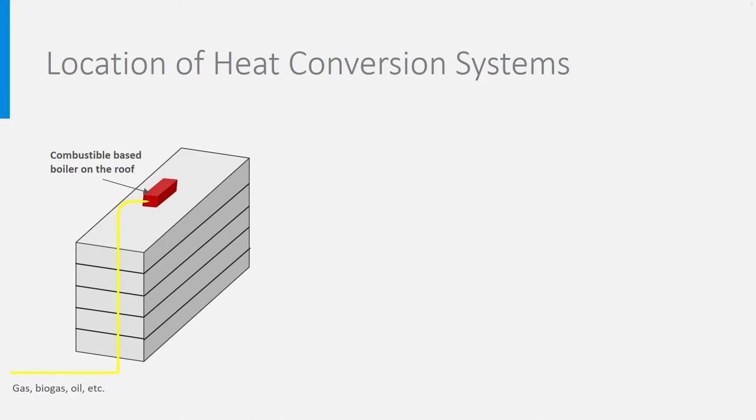It is sometimes possible to place it in the basement or elsewhere in the building, but it must then be placed in a special explosion-proof technical room. Electrical boilers and heat pumps can be more safely placed in a basement.